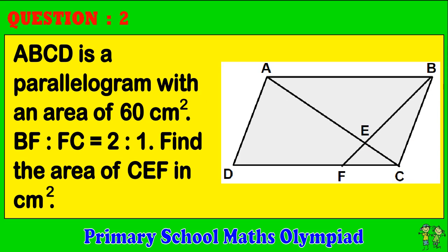Question 2. ABCD is a parallelogram with an area of 60 centimeters squared. BF to FC equals 2 to 1. Find the area of CEF in centimeters squared.